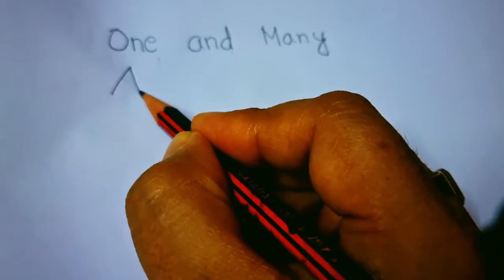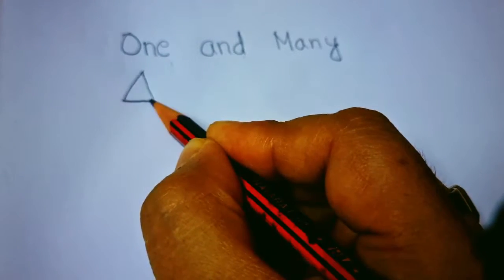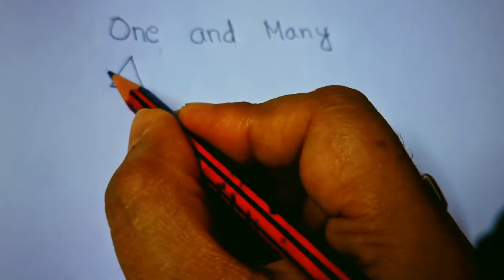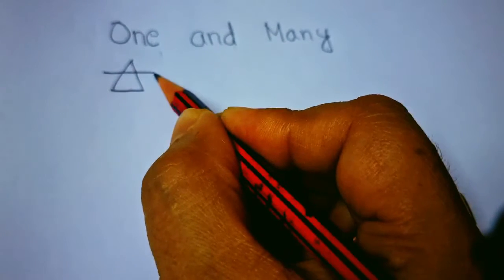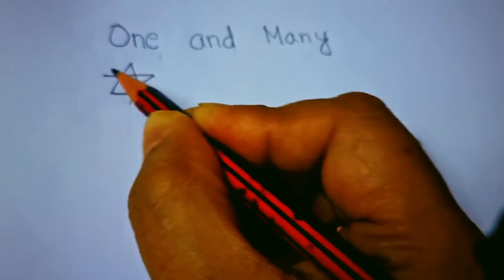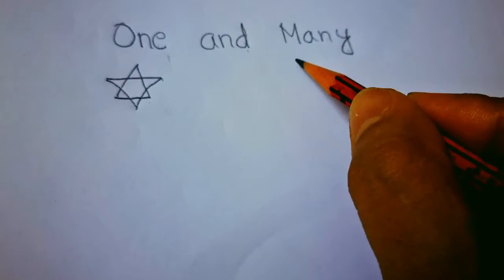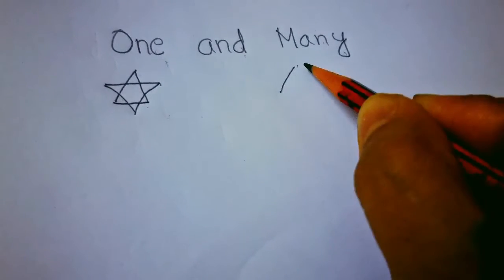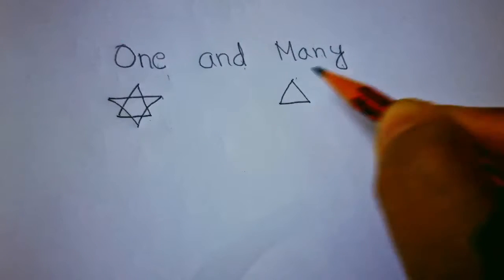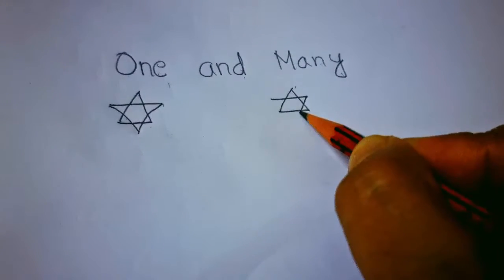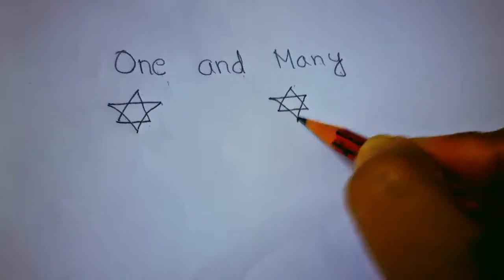First you make like this triangle, and then again a reverse triangle like this. See, very easy to make the star. Here one star. Now we'll make many stars. Same way, first make triangle like this and again reverse triangle.